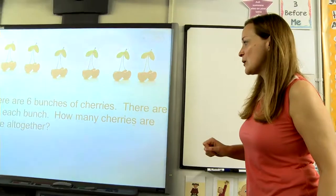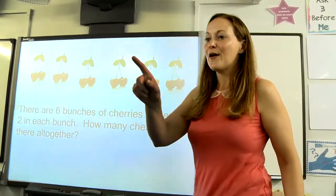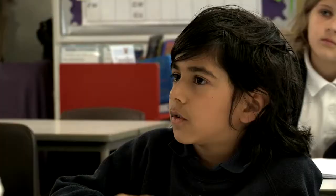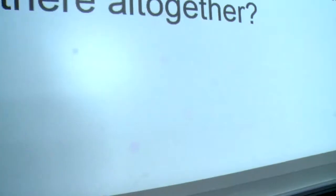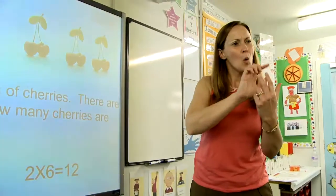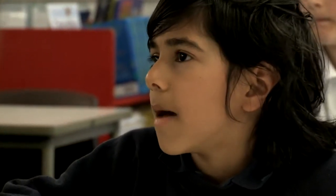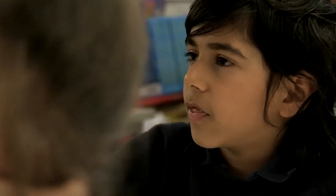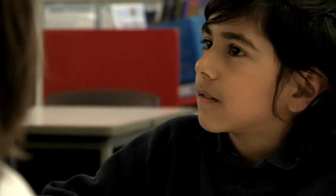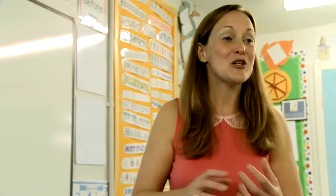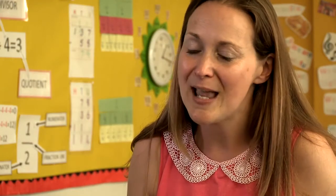So there are six bunches of cherries. There are two in each bunch. How many cherries are there altogether? Vikram, two times six equals twelve. The two means how many cherries are in each group, and the six means how many groups of cherries there are. The six is the groups — how many bunches of cherries there are — and there are two in each bunch. By doing those small steps it makes such a difference to the children's understanding, their security and their confidence as mathematicians.